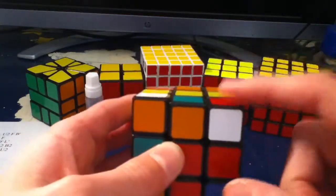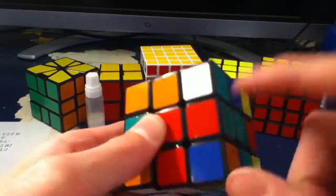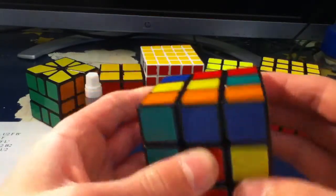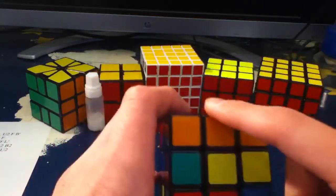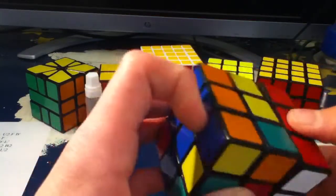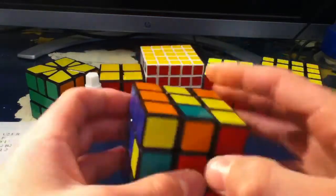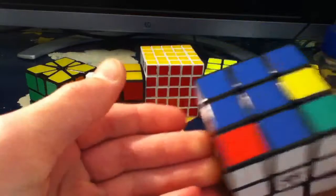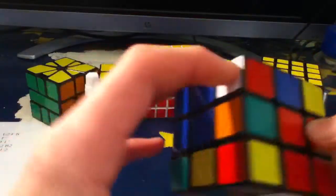So now first I see I have this corner and edge pair right here, so I'll pair it up. And while I insert it, I'll make this pair. See now this is inserted and this is paired.